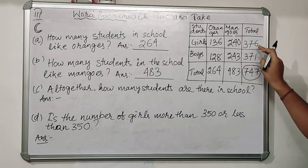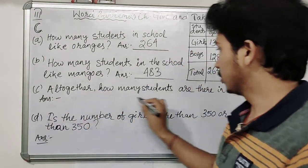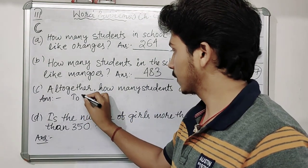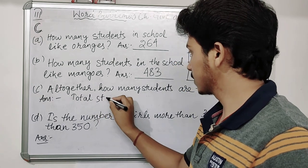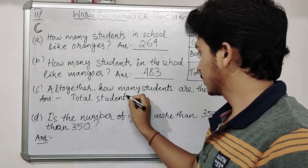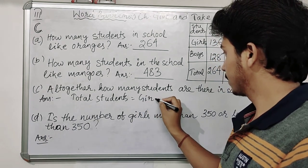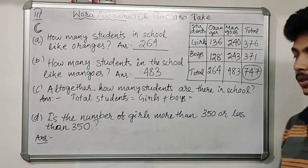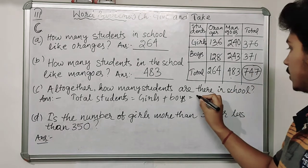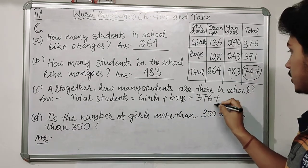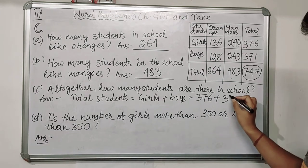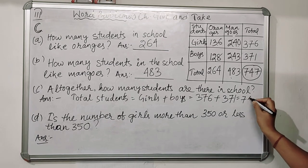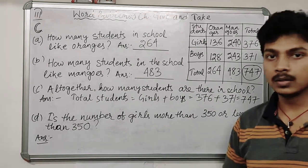Question C: altogether, how many students are there in the school? Total students means total number of girls plus total number of boys. Total number of girls is 376, total number of boys is 371. Adding them gives 747. So there are 747 students in this school.